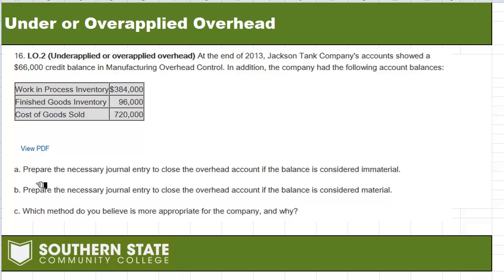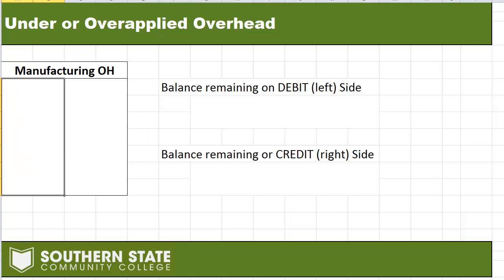So we can do Part A: prepare the necessary journal entry to close out that overhead if the balance is considered immaterial or not significant. And Part B: close it out if it's considered material. We'll look at it both ways. Before we get into that, let's look at manufacturing overhead and talk about how we know whether it's under or over applied.